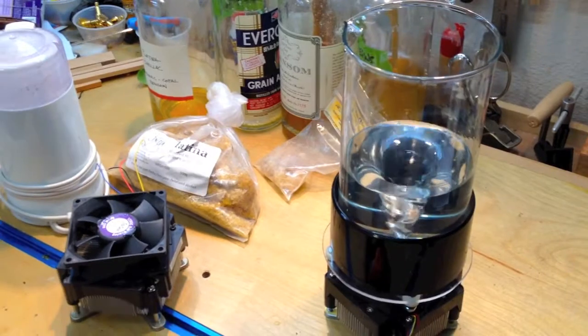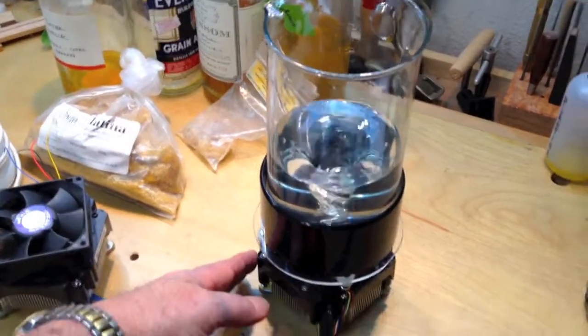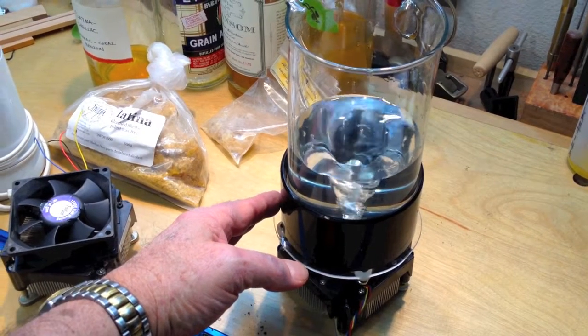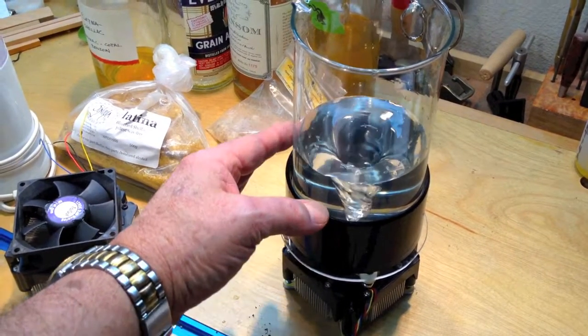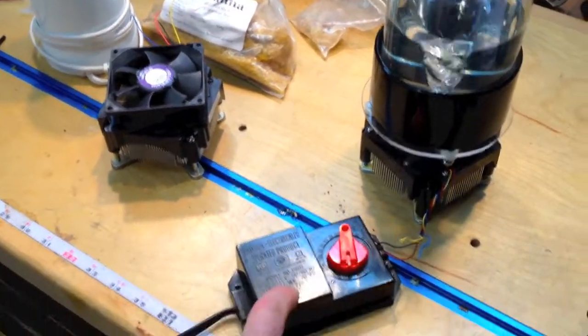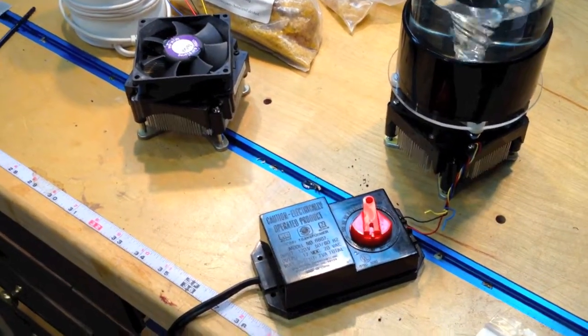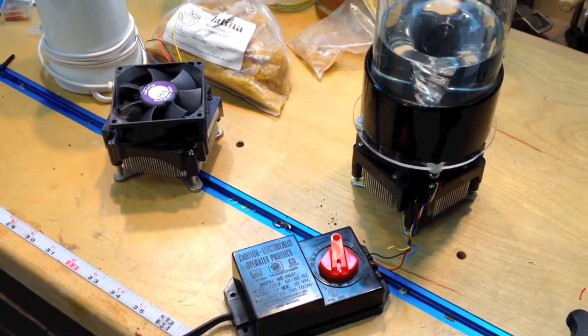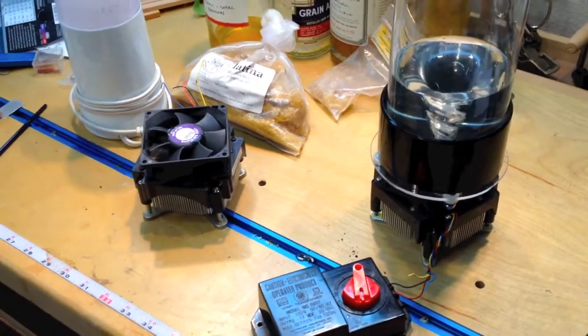Anyway, it's cheap. About $4 for the fan, $8 for the beaker, and I picked up a used rheostat for about $3 or $4 from a hobby shop. It's a great setup and works really well.